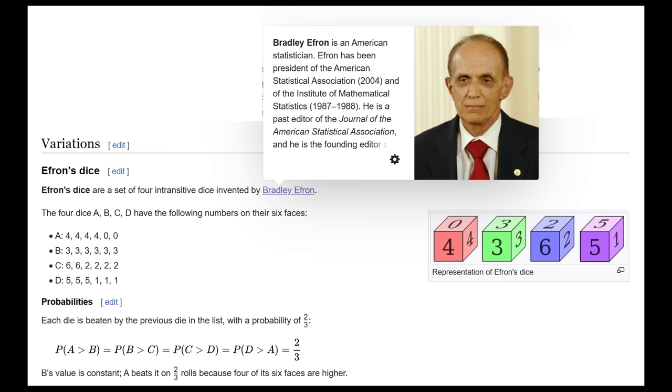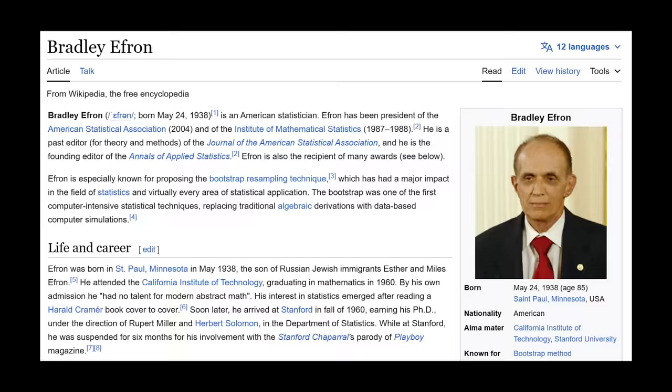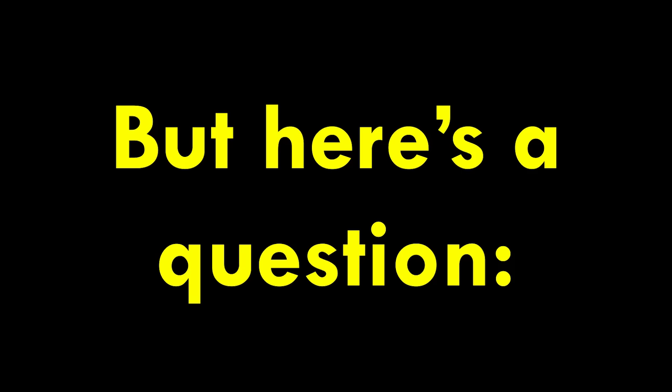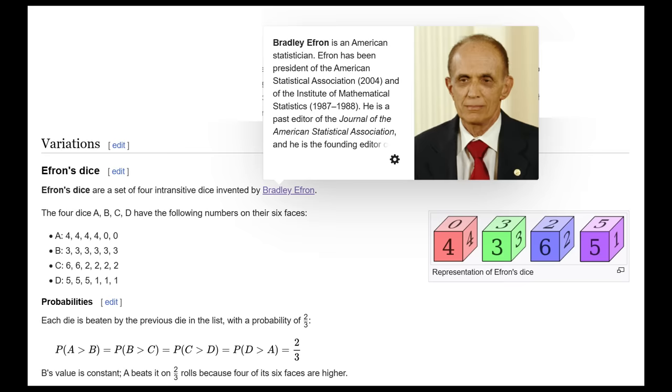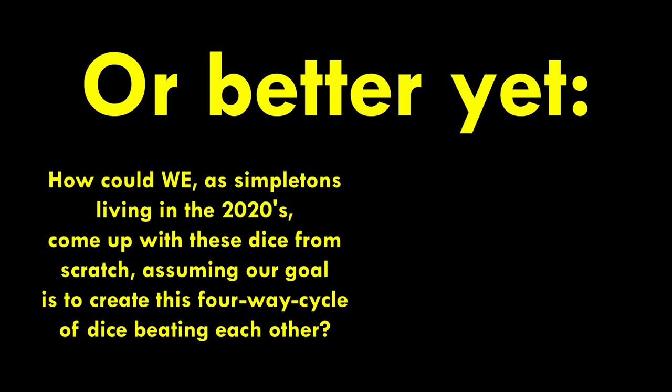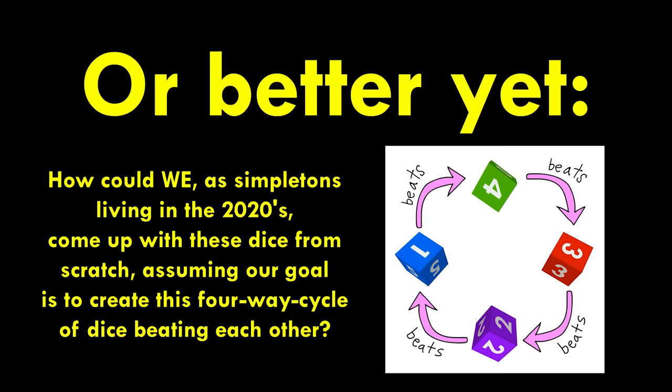Fun fact, these dice were invented by Bradley Efron, so huge shout out to him. But here's a question. How did Efron come up with these numbers? Like, they didn't just come out of thin air. Or better yet, how could we, as simpletons living in the 2020s, come up with these dice from scratch, assuming our goal is to create this four-way cycle of dice beating each other?